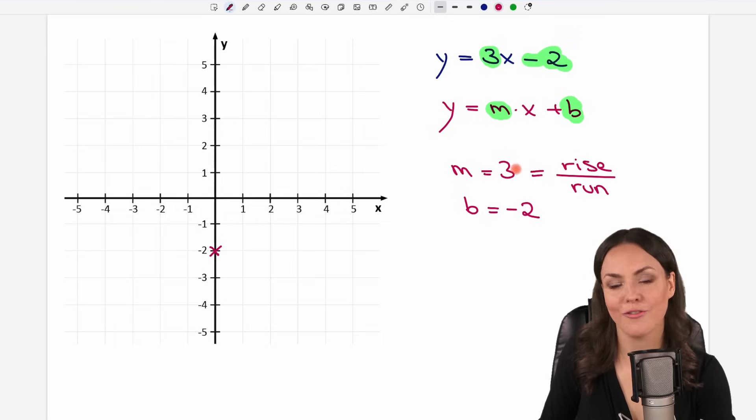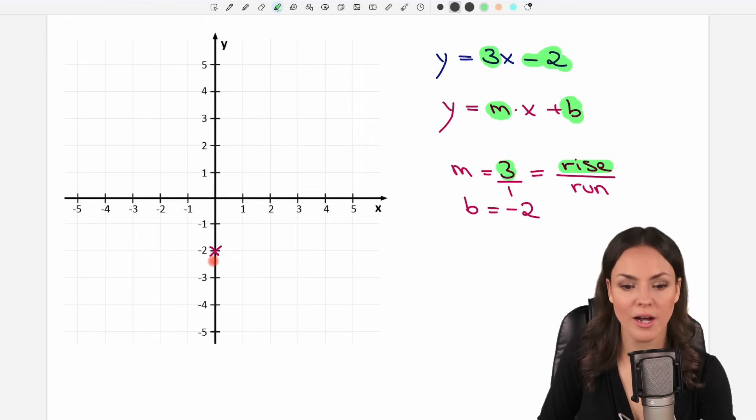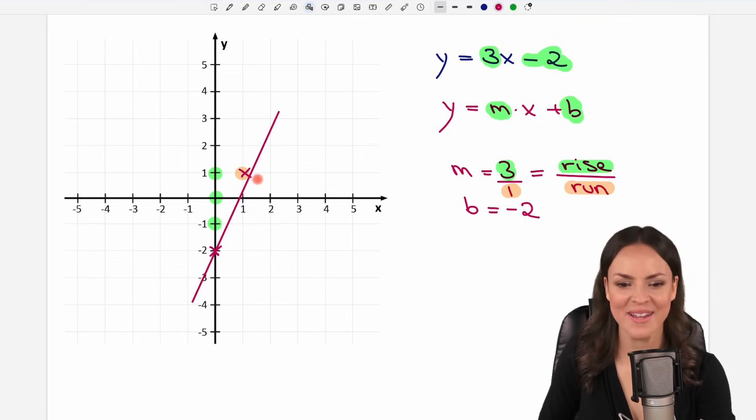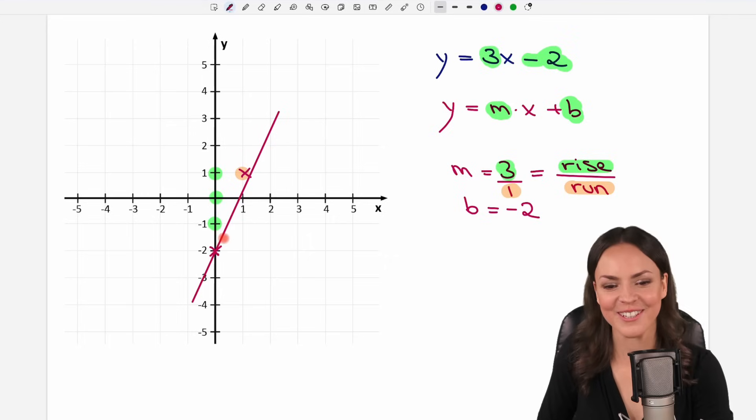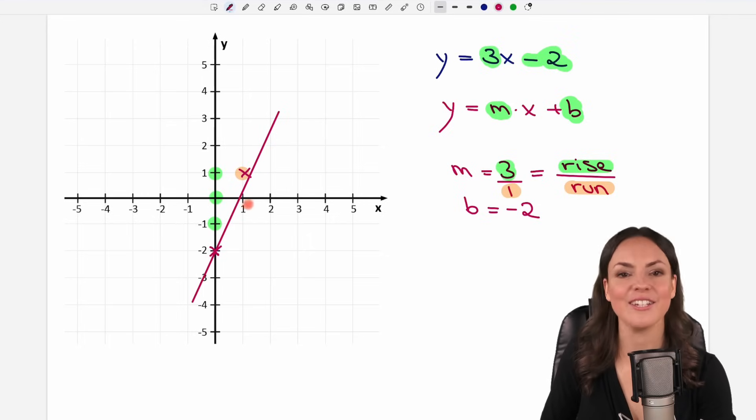But this time we don't have a fraction here. We only have an integer, just the three. But we can write the three as a fraction by dividing by one. So three is the same as three over one. So we rise three from our x: one, two, three. And then we run one positive. So from here we run one to the right. We put our x here. And then we just connect these two axes. Well not so good this time, but you know. Yeah, you can do it better with a ruler. So just connect the two axes and then you have your line.